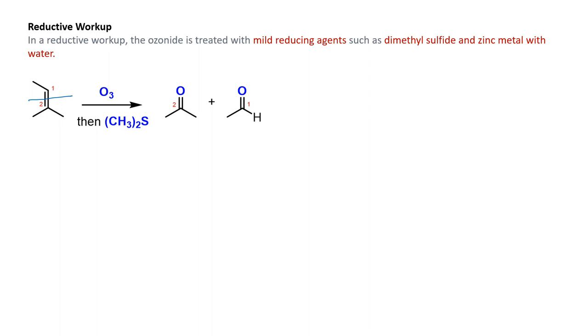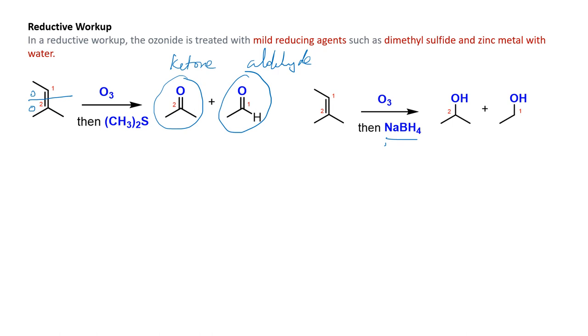We see here there is a ketone that is formed and an aldehyde that is formed. Similarly, if we are using even stronger reducing agent like sodium borohydride, the ketone or an aldehyde, both of them get converted to the alcohol. This is what happens in case of a reductive workup.